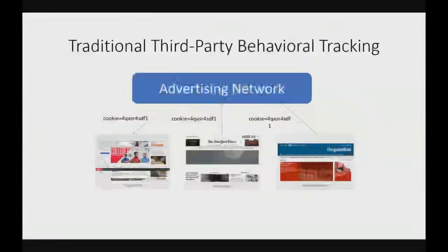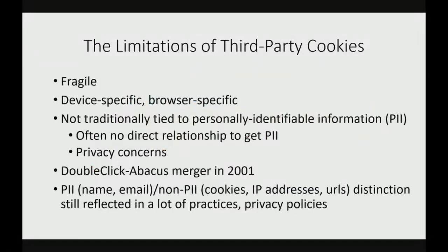Everyone knows how traditional cookie tracking works, but companies don't really love cookies — they're not that useful for a lot of things. They're not inter-device; they're not even really intra-device. They can't be used to correlate what you do across different apps or different browsers. They're also not traditionally tied to personally identifiable information, partly because these companies wouldn't have had a relationship to get that previously, and also due to privacy concerns. A lot of people didn't love the idea of companies tracking them around the web by real name. This came to a head in 2001 when DoubleClick, before they were bought by Google, merged with a data broker called Abacus.